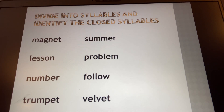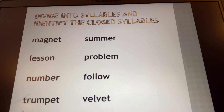Now I want you to do something on your whiteboards. I want you to write these words on your whiteboards or a piece of paper: magnet, lesson, number, trumpet, summer, problem, follow, velvet. Unpause when you've written these on something.